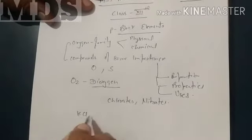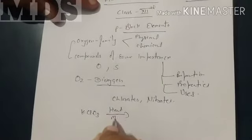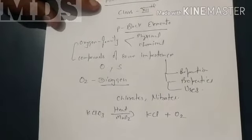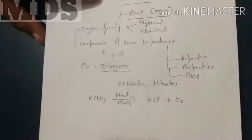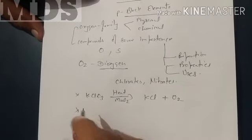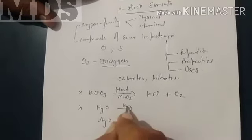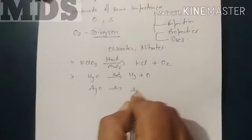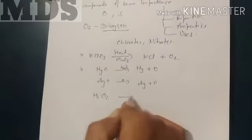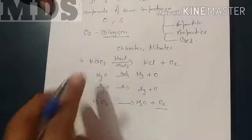Like, for example, if we take chlorate salt, and we will heat it particularly in presence of some catalyst, they will easily get decomposed to liberate the oxygen. This is one of the methods. You can also do the thermal decomposition of some non-reactive elements like mercury oxides, silver oxides. They will also get thermally decomposed easily liberating the oxygen particles.